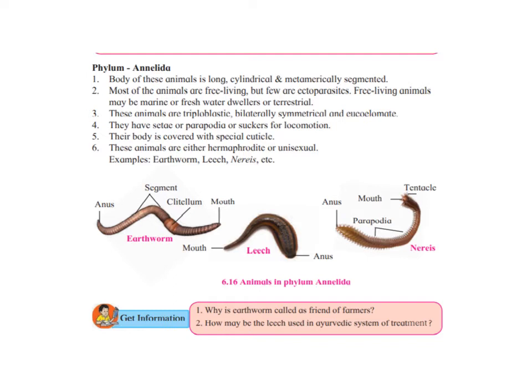Examples are earthworm, leech, Nereis, etc. Earthworm is not a parasite; it is called the friend of the farmer. When earthworms burrow, they keep digging, making the soil loose. This allows air movement and water to seep inside the soil. At the same time, earthworm helps in decomposition and increases the richness, manure capacity, and fertility of the soil.